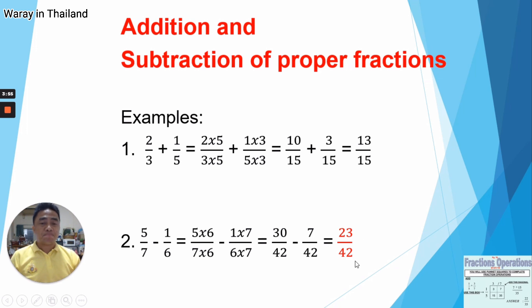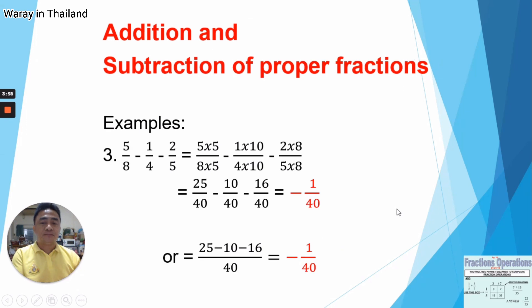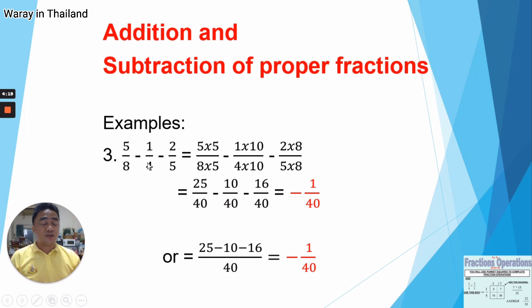Did you understand? Okay, so we have here more examples. We have the fractions 5 over 8 minus 1 over 4 minus 2 over 5. We have three proper fractions, so we need to know first what is the LCM — what would be the common denominator between these three? By the help of LCM, the least common multiple, we will know what would be the denominator, and that is 40. That is the LCM between 4, 5, and 8.